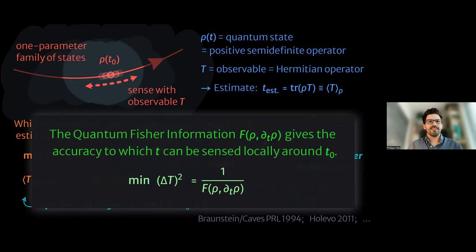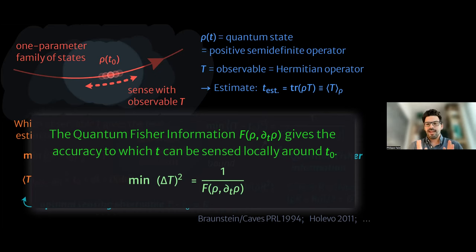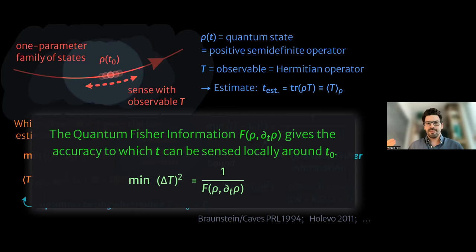This is also called the quantum Cramér-Rao bound — any sensing procedure would not be able to perform better than this inverse of the quantum Fisher information. The important takeaway: the quantum Fisher information tells you how accurately you can sense the value of a parameter to first order around some reference value T₀. The smallest possible squared error is the inverse of the quantum Fisher information.